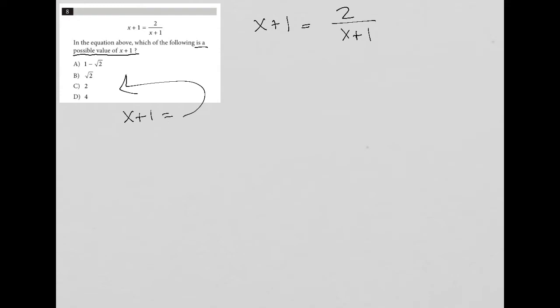x plus 1 is equal to one of these options. So if that's true, that means I can use a strategy called plug-in answers, or PIA. Now, how do I use plug-in answers? Let's try it out.